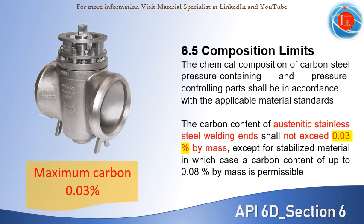The chemical composition of carbon steel, for both pressure-containing and pressure-controlling parts, shall be in accordance with the applicable material standards or specification. API 6D defines some specific requirements to restrict the contents of some elements such as carbon, sulfur, and phosphorus.